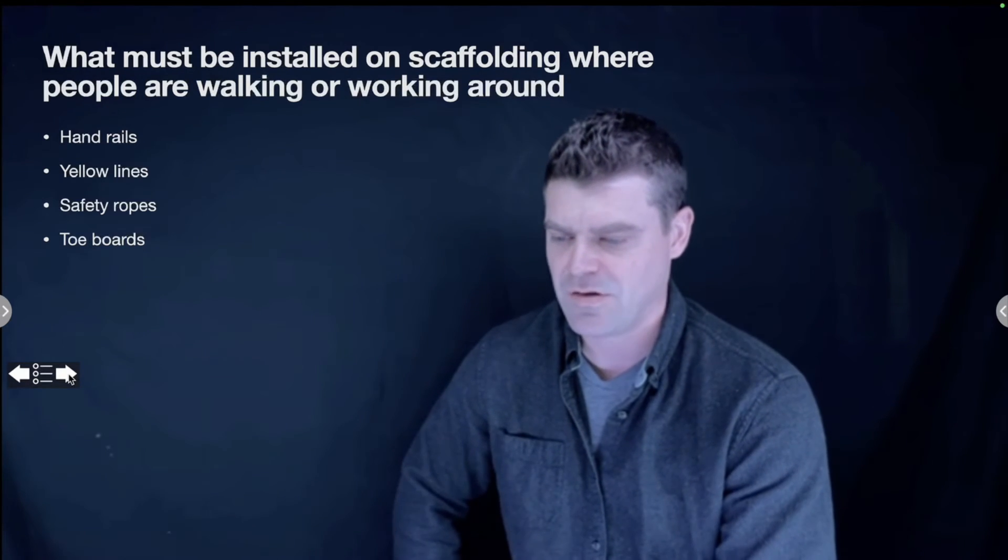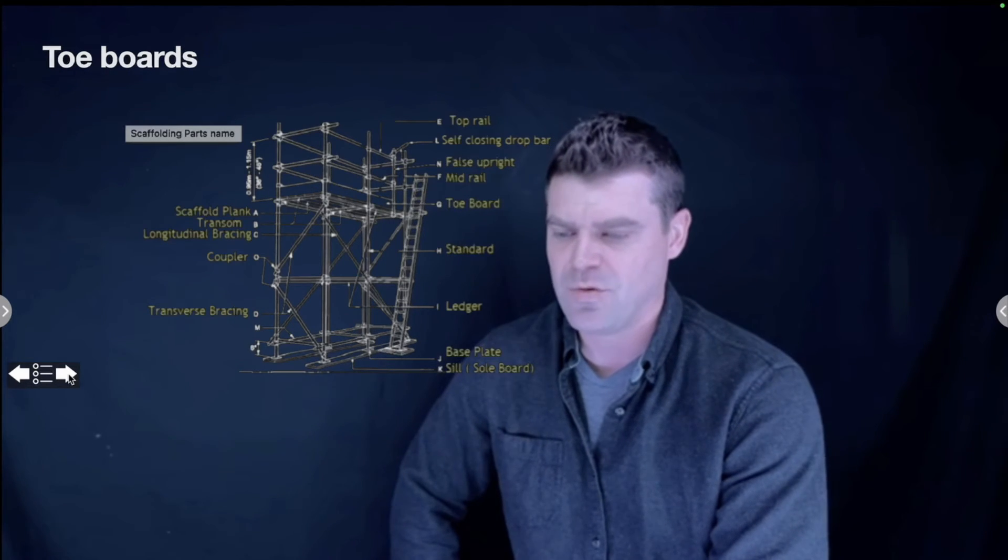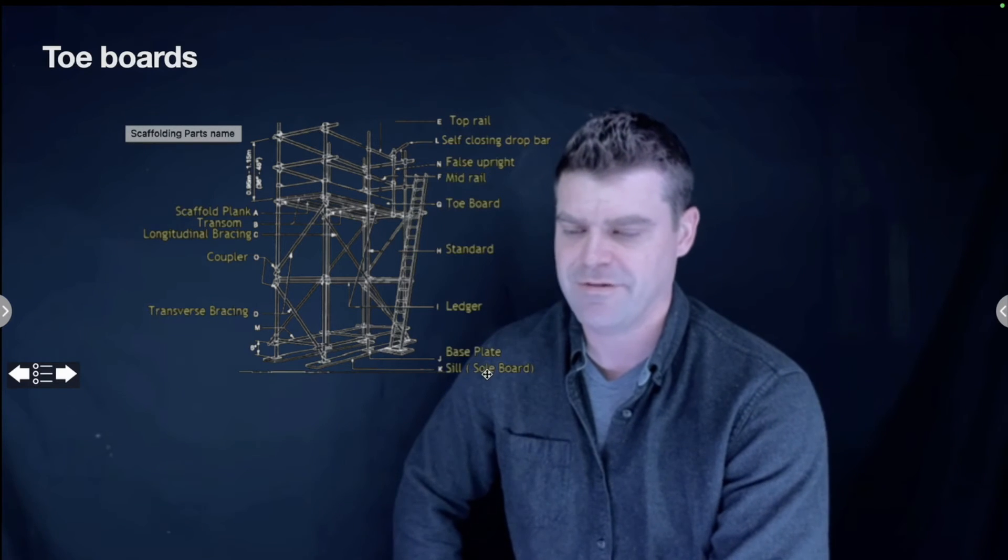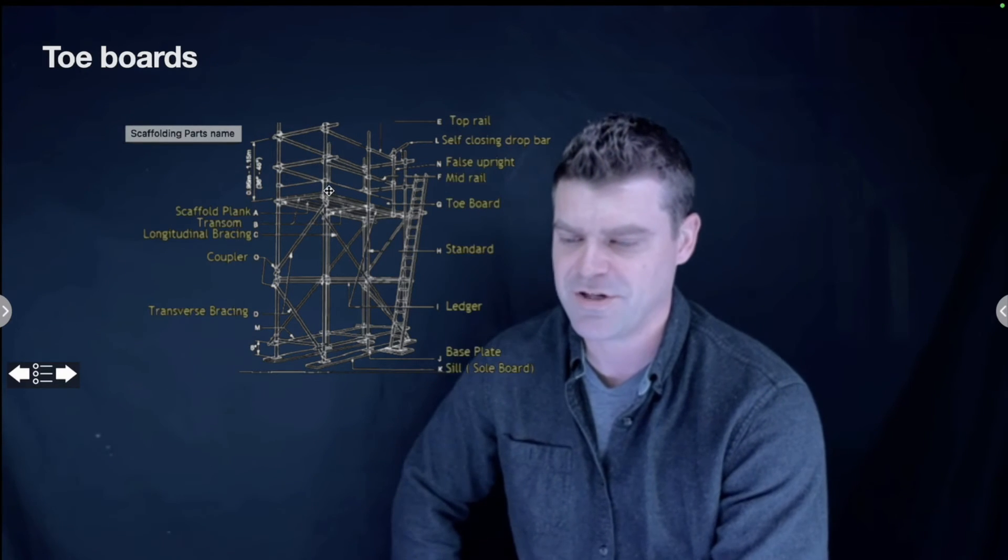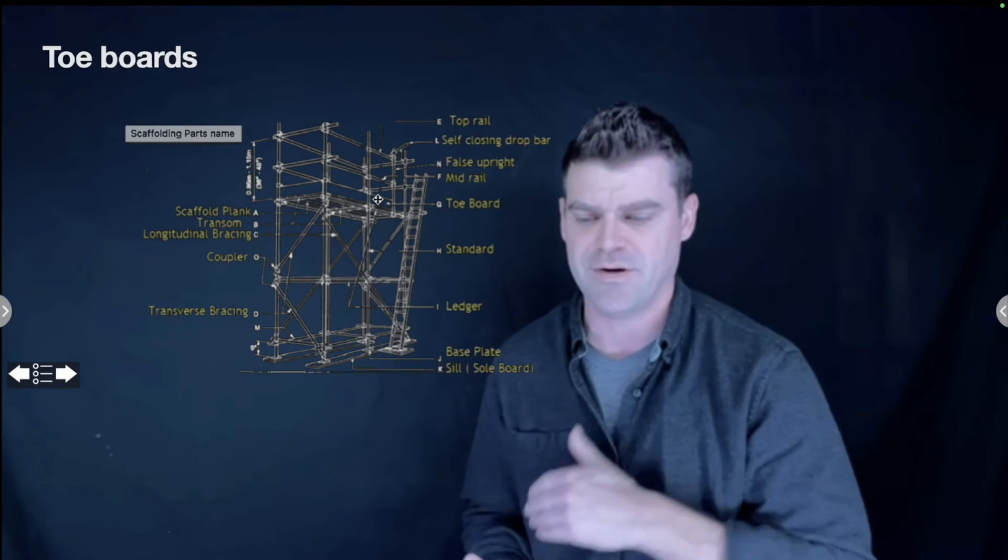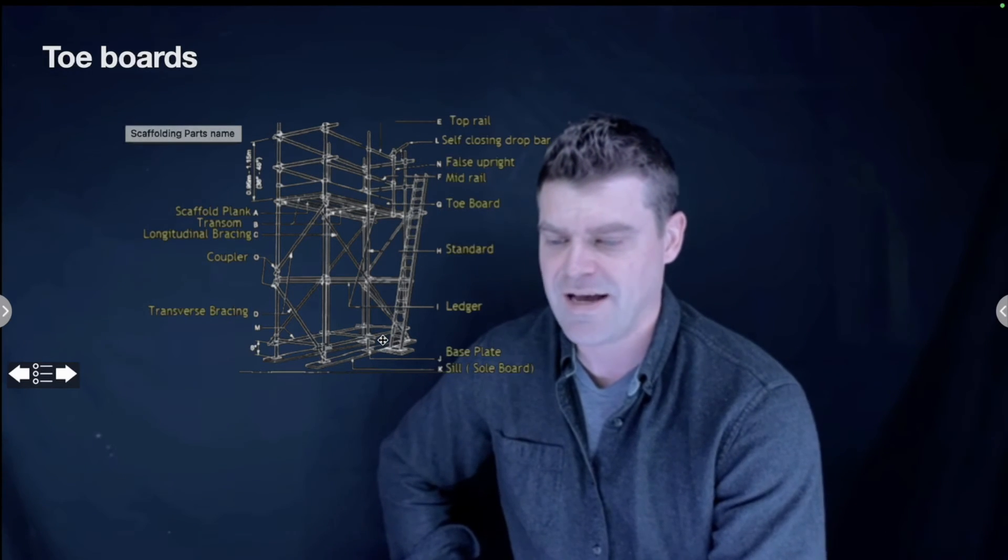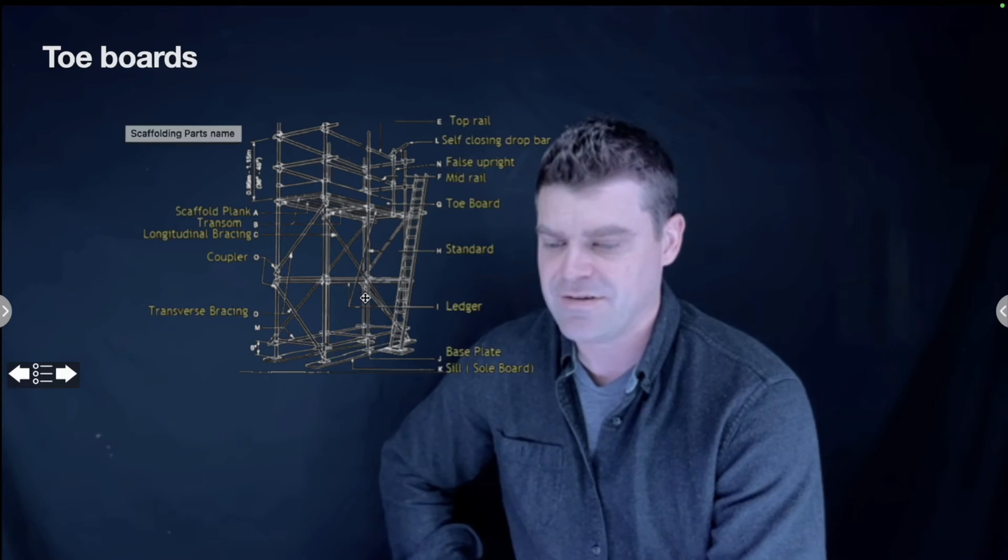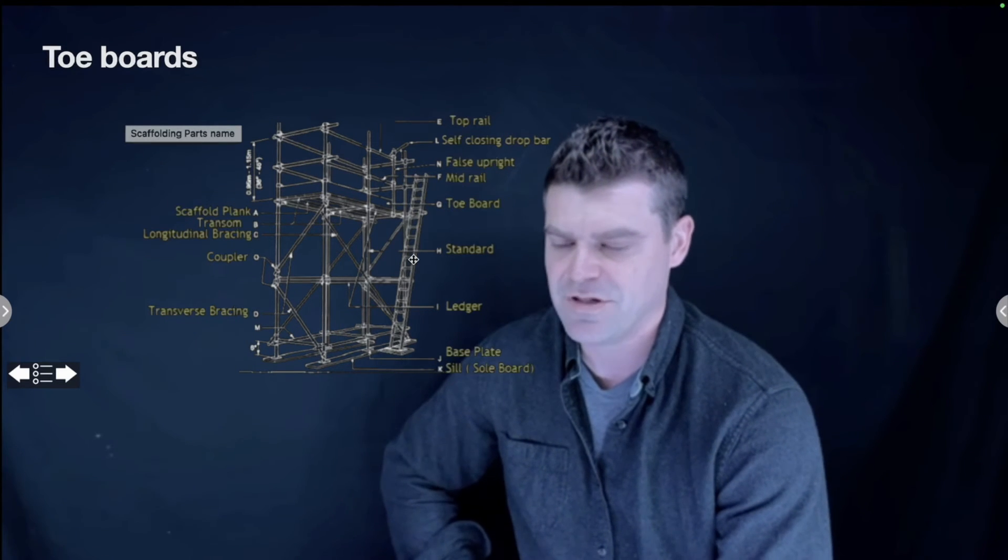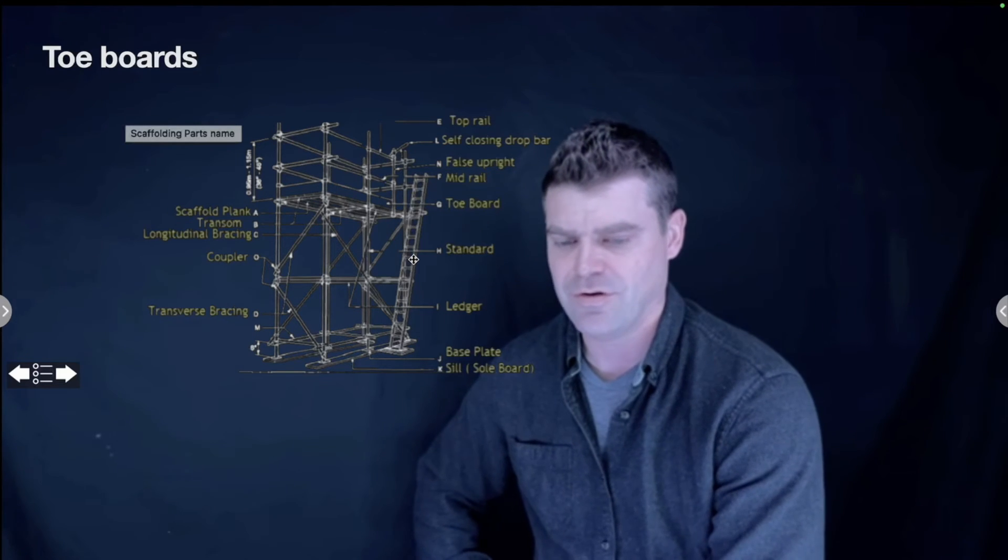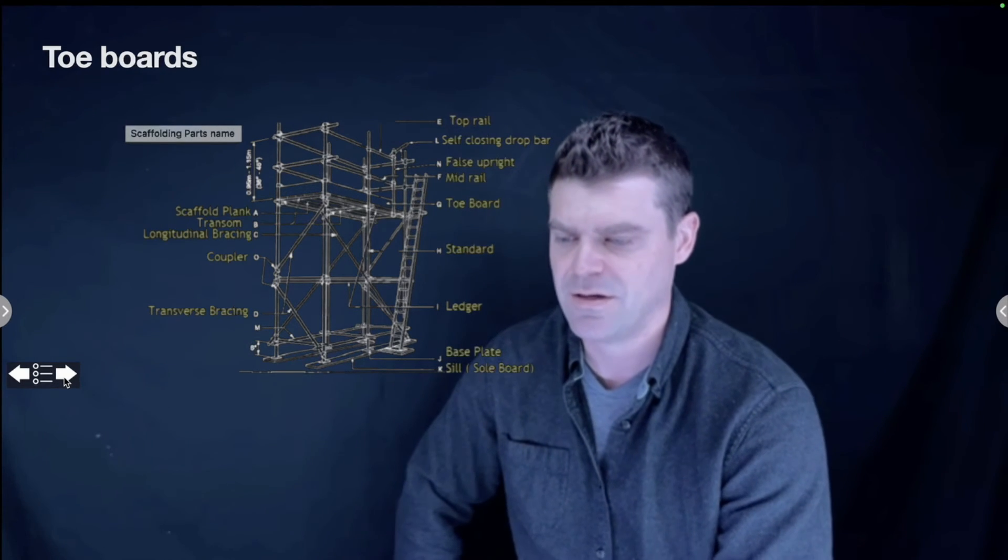What must be installed on scaffolding where people are walking or working around? Handrails, yellow lines, safety ropes, or toe boards? Toe boards. These are all the basic parts and names of a typical tube and clamp type scaffold system. Make sure that you know all these, but the one in this question is toe board. The toe board is there so if you have like a bucket of something or some tools, they don't get kicked off and fall down onto somebody. You have your mid rail, your top rail, the self-locking bar, your ladder, you have standards, ledgers, base plate, sill, traverse, transverse bracing, and then your scaffolding planks, which need to be a minimum of two-by-twelve Douglas fir or some type like Sitka spruce. There's all kinds of standards for the type. You can't just use any kind of wood for scaffolding plank, so make sure that you know all that.